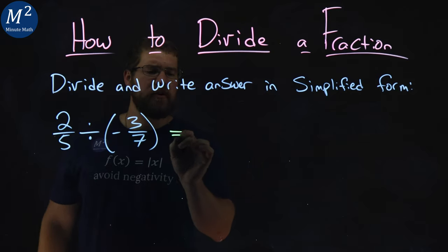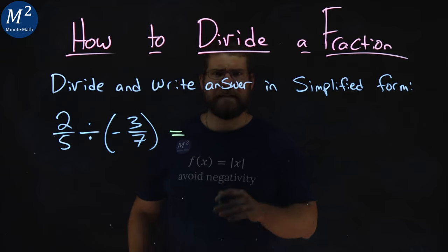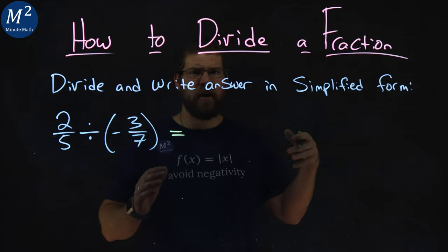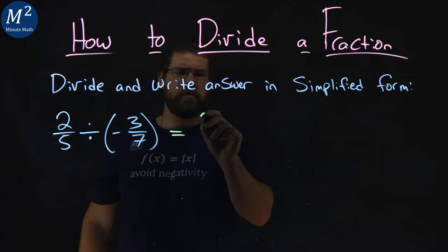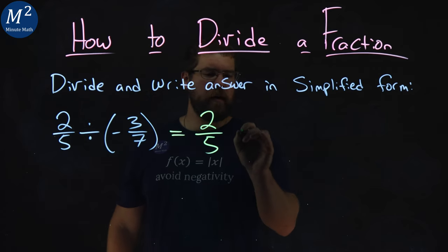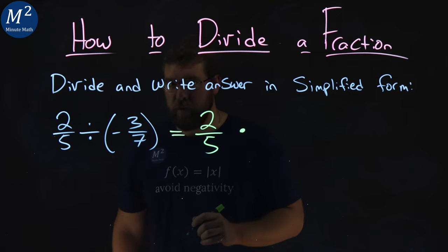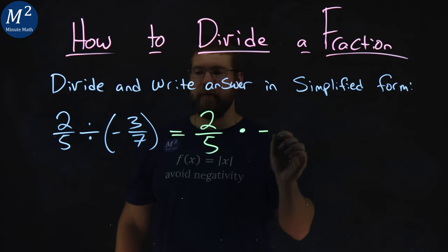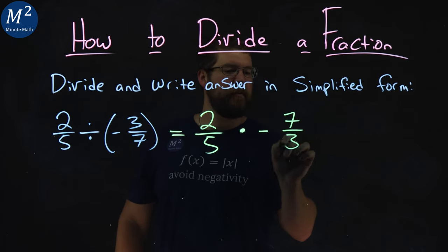Well, one thing we should know about division is the same thing as multiplication of a reciprocal. So, two fifths divided by negative three sevenths is the same thing as two fifths multiplied by a negative seven thirds.